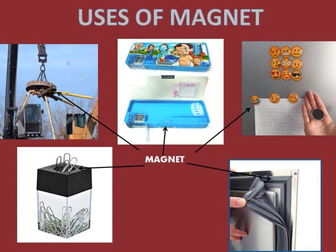Have you ever seen the sticker that remains fixed to the surface of the almirah, or the door of the refrigerator? Or did you notice the pin holder where the pins seem to stick to the holder? In the case of some pencil boxes, the lid fits tightly when it is closed even without a locking arrangement. Such stickers, pin holders, and pencil boxes have magnets fitted inside them. So these are the uses of a magnet.